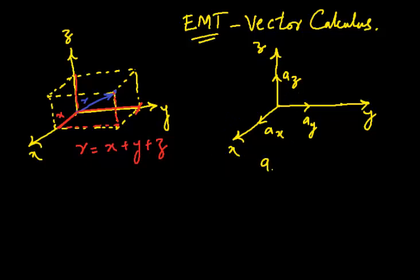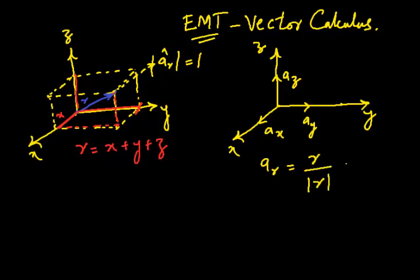This was an introduction about unit vectors. As we discussed before, for a particular vector we have a unit vector a_r in the direction of the vector with a magnitude of one always. If you want to calculate this unit vector, we take r divided by the magnitude of r — this gives us the equation for the unit vector.